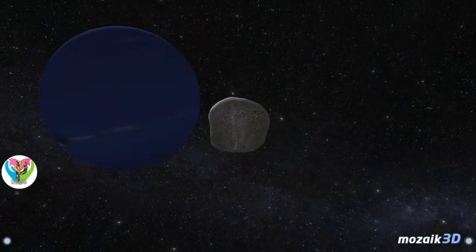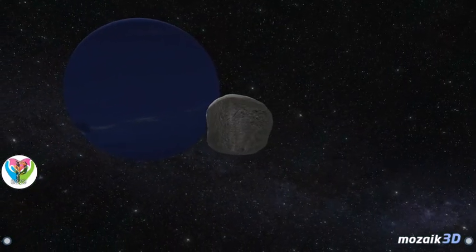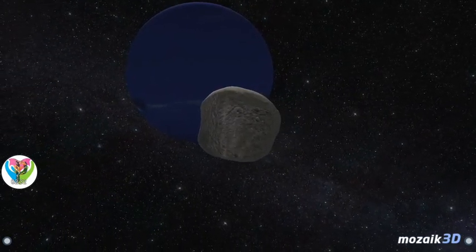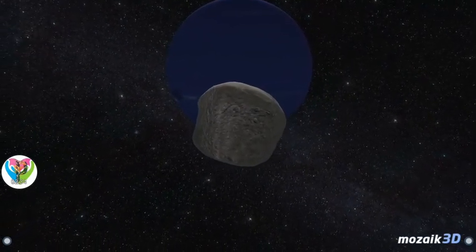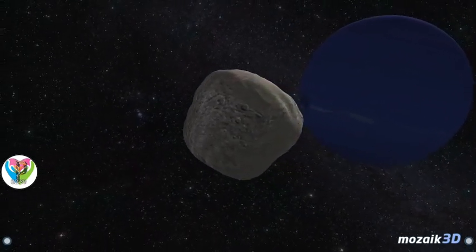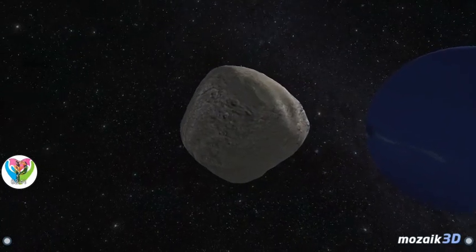Neptune has a planetary ring system. The thickness of the rings, which are composed of rock and dust particles, varies. Small moons orbit Neptune between the rings. Six of those have a diameter of over 100 kilometers.